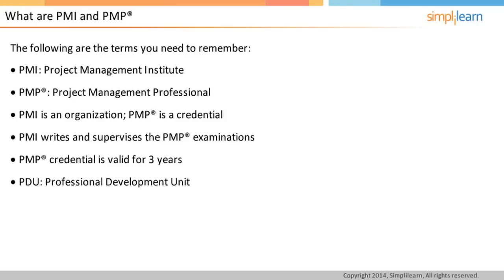Over a three-year period, one must have acquired 60 PDUs to be eligible to renew the PMP certification. After submitting the information about the acquisition of at least 60 PDUs in the last three-year period, you need to pay the renewal fee in order to renew the certification for another three years. This can be conveniently done online at www.pmi.org.